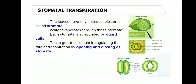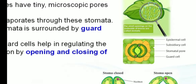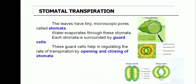Stomata structure is shown in the picture. Each stomata is surrounded by guard cells. These guard cells help in regulating the rate of transpiration by opening and closing the stomata. When the stomata is opened, transpiration occurs; when it is closed, transpiration does not occur. The guard cells are the protectors of these stomata.